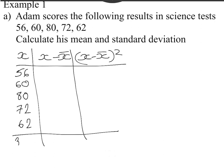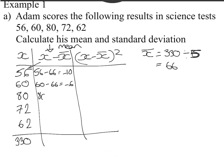If we add up all these numbers, this comes to 330. Our first thing is to get our mean. Our mean is the total of all the numbers divided by five because there's five numbers in the list, and that gives us 66. Now this middle column, x is each of these numbers, x-bar is your mean. So we take 56 and take away our mean, that gives us minus 10. We then take 60, take away our mean, gives us minus 6. Then 80 take away 66 is 14, and so on. 72 take away 66 is 6, and 62 take away 66 is minus 4.